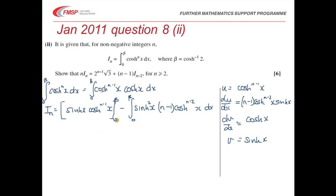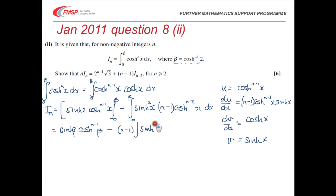Evaluating the boundary term: the value at x equals 0 is zero, and at x equals beta we get sinh beta times cosh to the n minus 1 of beta. Taking (n minus 1) outside the integral, we have sinh squared x times cosh to the n minus 2 of x. The trick now is to replace sinh squared x with cosh squared x minus 1, since everything needs to be in terms of cosh.